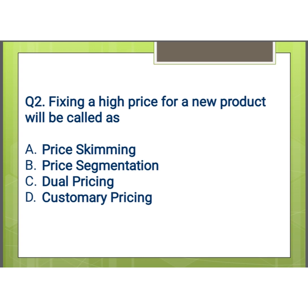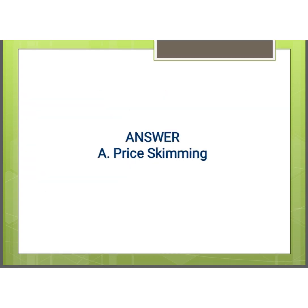Our second question is: fixing a high price for a new product will be called as what? Options are: A) price skimming, B) price segmentation, C) dual pricing, and D) customary pricing. And our answer is A, that is price skimming.